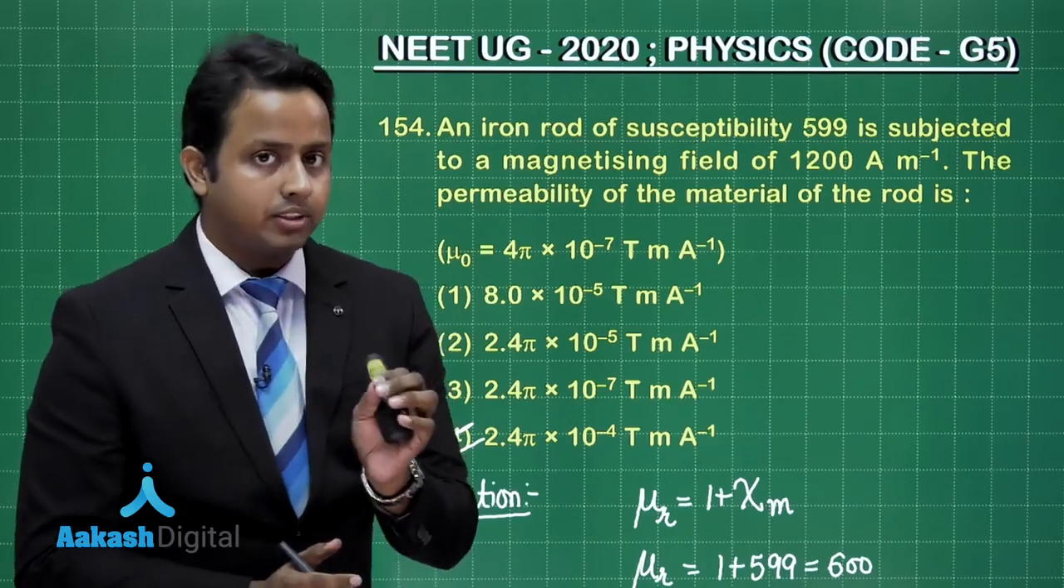Moving further, question number 155 says: the quantity of heat required to raise the temperature of two solid copper spheres of radii r₁ and r₂, where r₁ = 1.5 r₂, through 1 kelvin, is in the ratio of—this is the question. So let's write down the statement.